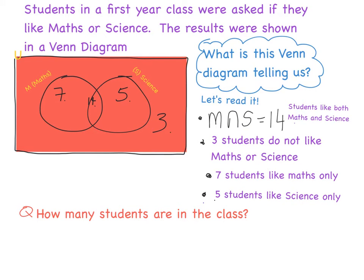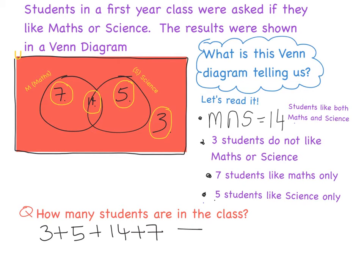To find out how many students are in the class, I'm going to add up all of my numbers. I have three students who don't like anything, plus five who like science, plus 14 who like both, and finally seven who like just maths. So three plus five plus 14 plus seven gives me 29 students. I can write up in the top corner that my universe is equal to 29, which will help me quickly calculate how many people are involved.